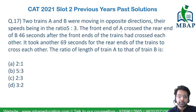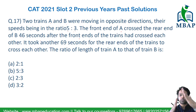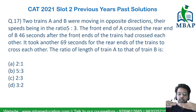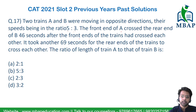Let's look at the next question on the topic of time, speed, and distance. Question 21: Two trains A and B were moving in opposite directions, their speeds being in the ratio 5:3. The front end of A crossed the rear end of B 46 seconds after the front ends of the trains had crossed each other. It took another 69 seconds for the rear ends of the trains to cross each other. Find the ratio of length of train A versus train B.